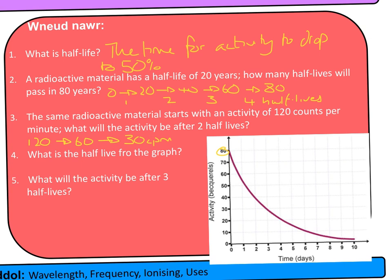Now for the graph: our initial value is 80, and half of that is 40. We draw a horizontal line across at 40, then a vertical line down, and we can see the half-life is two days.